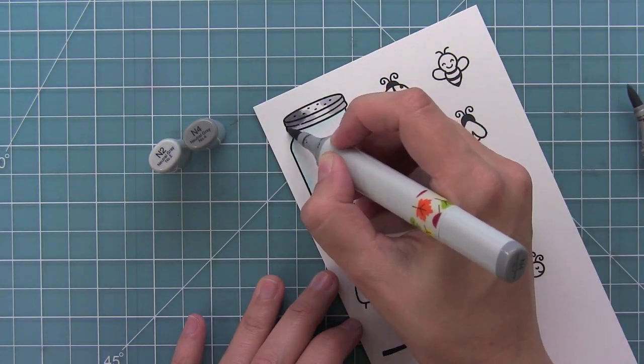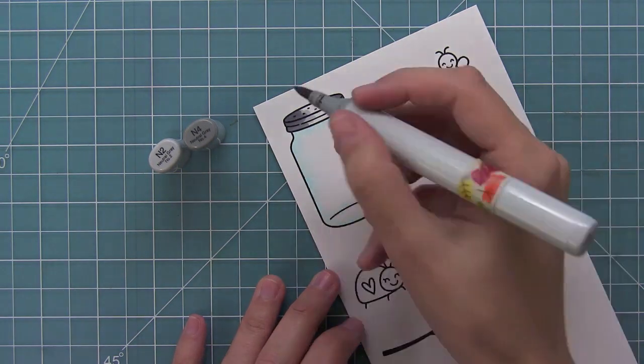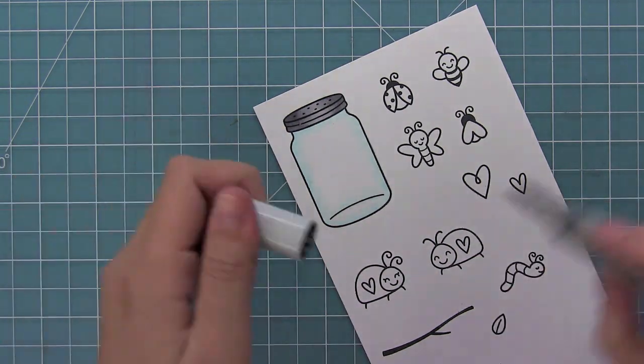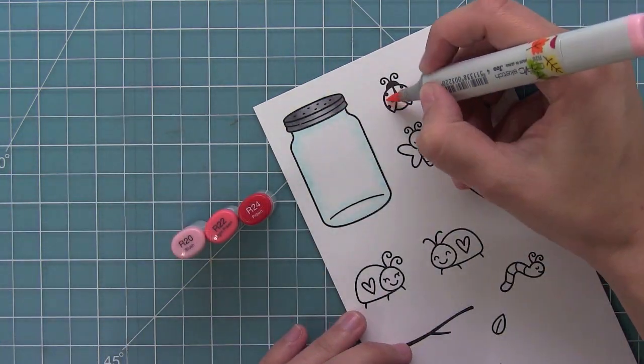Now it's time to add some color to the lid so I'm just adding some shading to the outsides just to give it some nice dimension in the middle there. And now I can go ahead and add some color to these bugs.